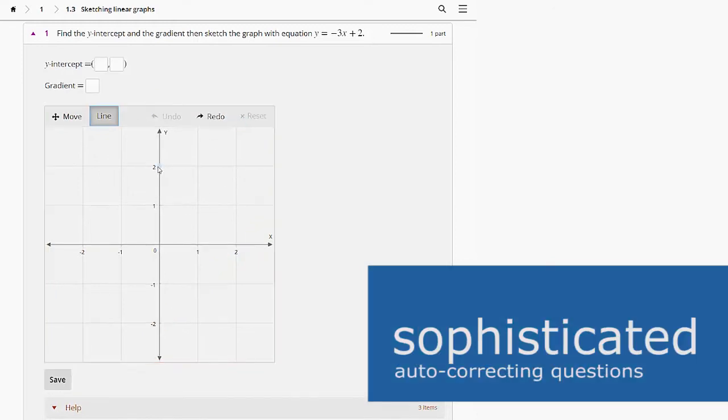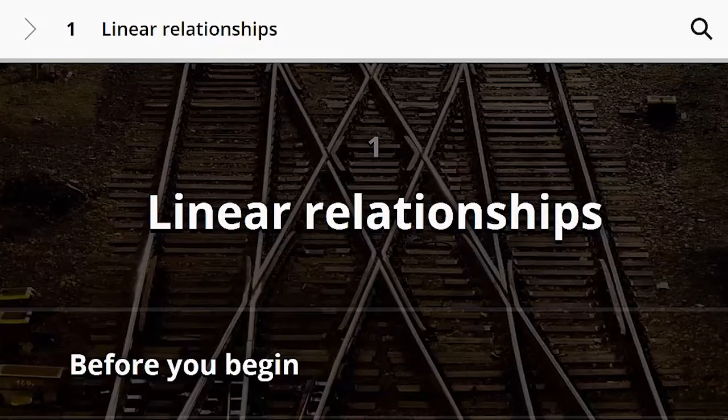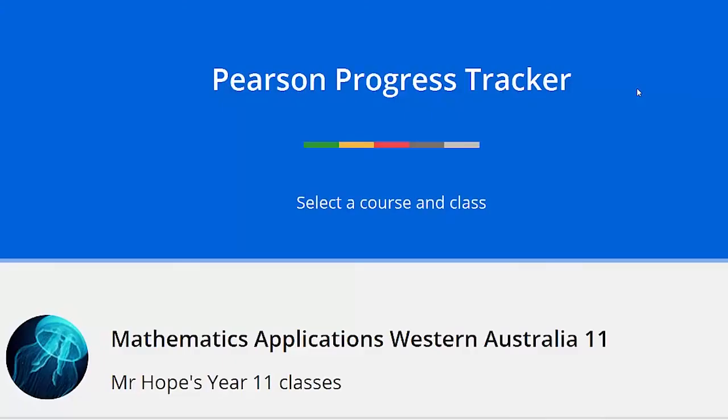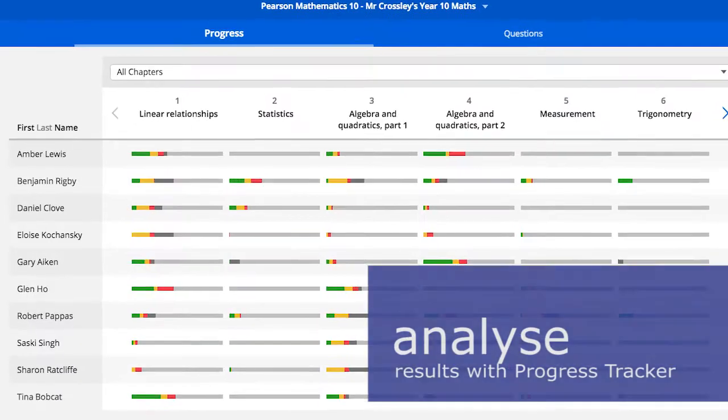Sophisticated auto-correcting questions track progress and allow early identification of areas where students need support. Auto-correcting questions are linked to the progress tracker for easy analysis and viewing of results.